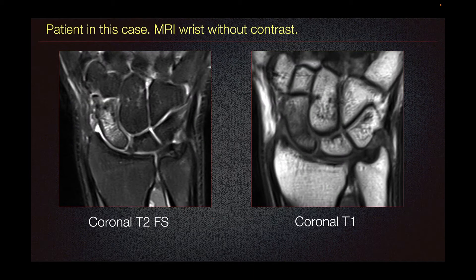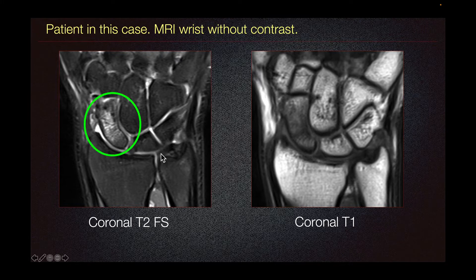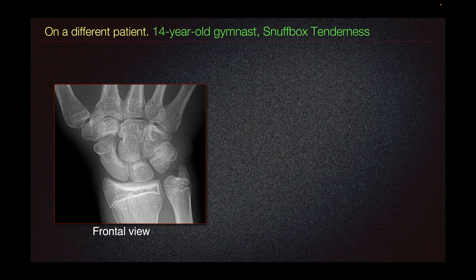The patient underwent MRI showing edema about the proximal scaphoid with associated hypointensity and a linear band, consistent with a non-displaced fracture. This is a different patient — a 14-year-old gymnast with snuffbox tenderness.